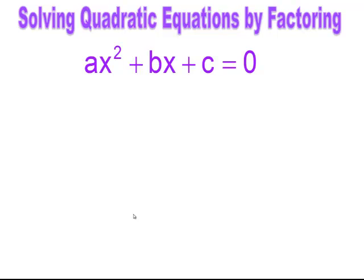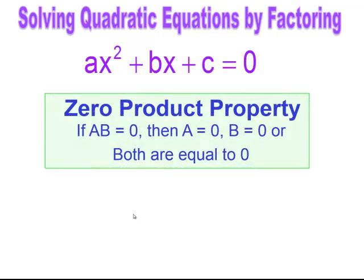Solving quadratic equations by factoring. When we have a quadratic equation and we want to solve by factoring, we're going to use the zero product property. What that states is: if you have a times b and it equals zero, then either the a factor is zero, or the b factor is zero, or both are equal to zero.